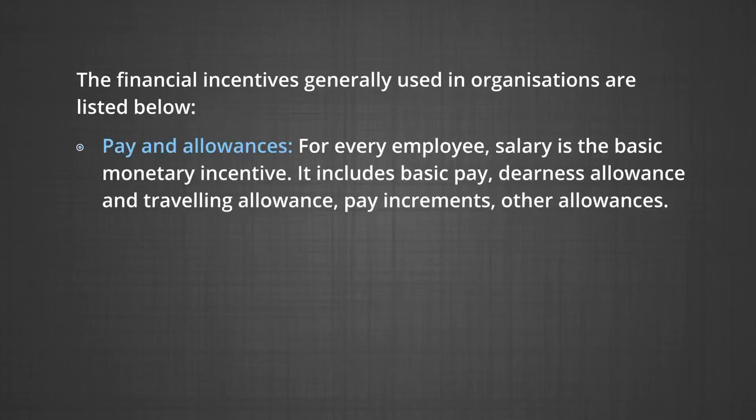In the context of the existing economic system, money has become a means to satisfy physical needs and obtain social position and power. Money is an important motivator because of its purchasing power. It plays a significant role in satisfying physiological and security needs, and also helps satisfy social needs as it is recognized as a basis of status, respect and power. Once physiological and security needs are satisfied, money ceases to be a motivator. The first financial incentive is pay and allowances — salary is a basic monetary incentive including basic pay, dearness allowance, travelling allowance, pay increments and other allowances. Good pay and allowances help the organization retain and attract capable persons.